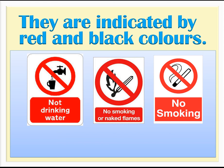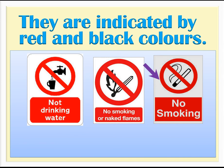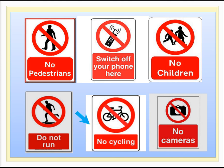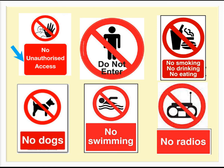Some prohibition signs: Not drinking water. Naked flames prohibited. No smoking. No pedestrians. Switch off mobile phones. No children allowed. Do not run. No cycling. No camera. No unauthorized access. Do not enter. No eating, drinking, or smoking.